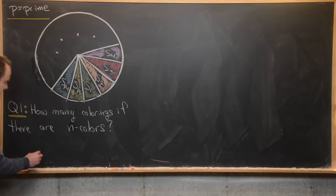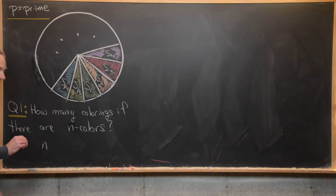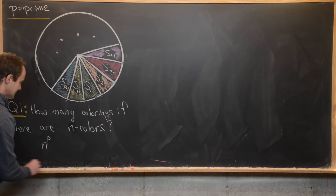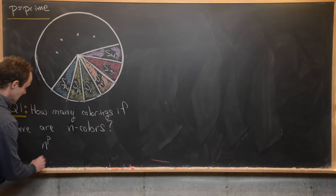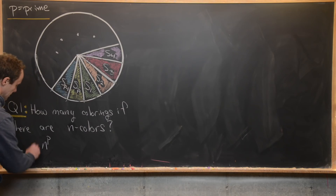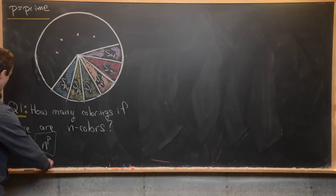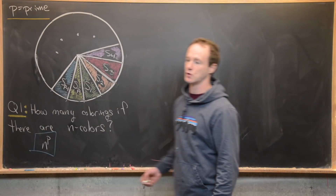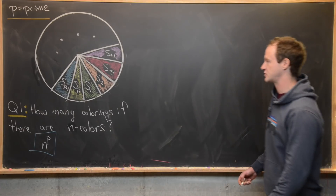So that means there are a total of n times itself P times, or n to the P total colorings. That would be our answer to this first warmup question.